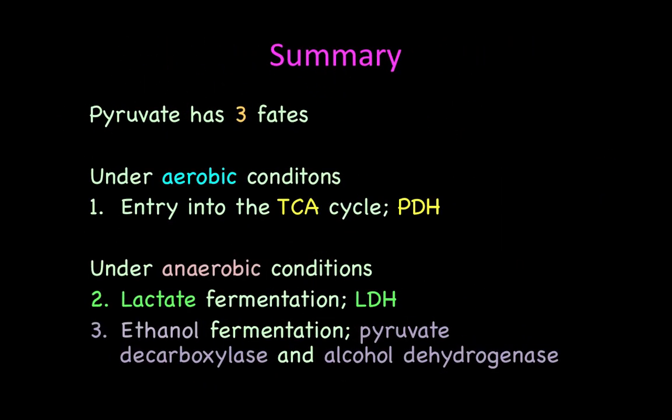In summary, pyruvate has three fates, and what happens depends on whether oxygen is present. Under aerobic conditions, pyruvate is converted to acetyl-CoA, which enters the TCA cycle — catalyzed by pyruvate dehydrogenase (PDH). Under anaerobic conditions, you have lactate fermentation: pyruvate is converted to lactate by lactate dehydrogenase. Finally, there is ethanol fermentation, which involves two enzymes: pyruvate decarboxylase and alcohol dehydrogenase.